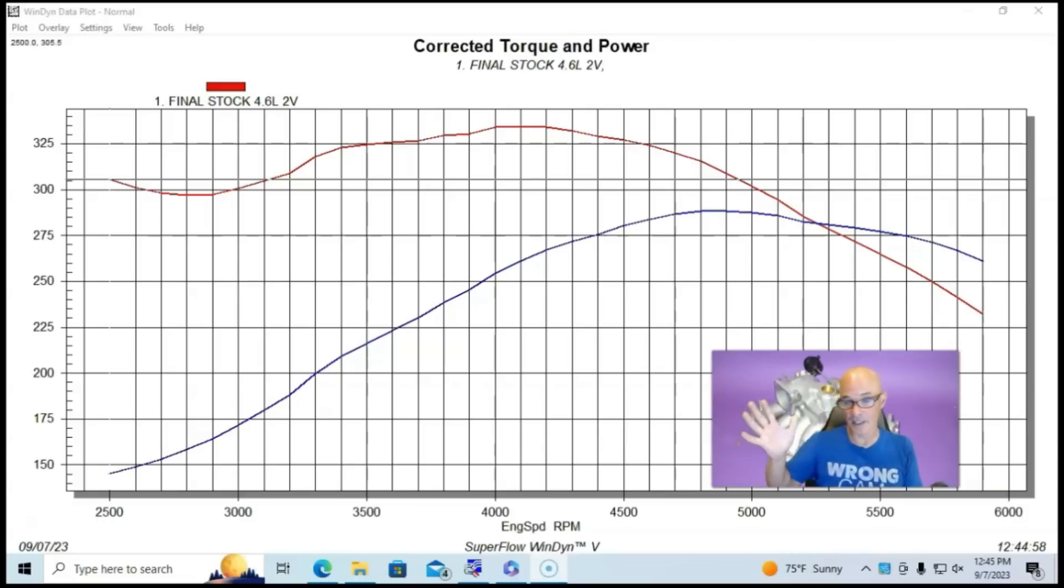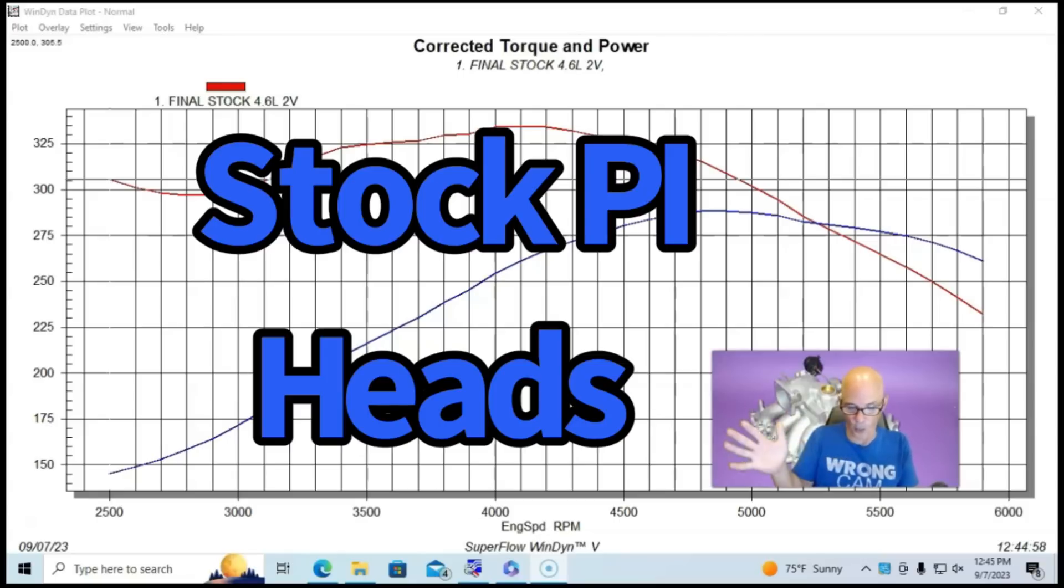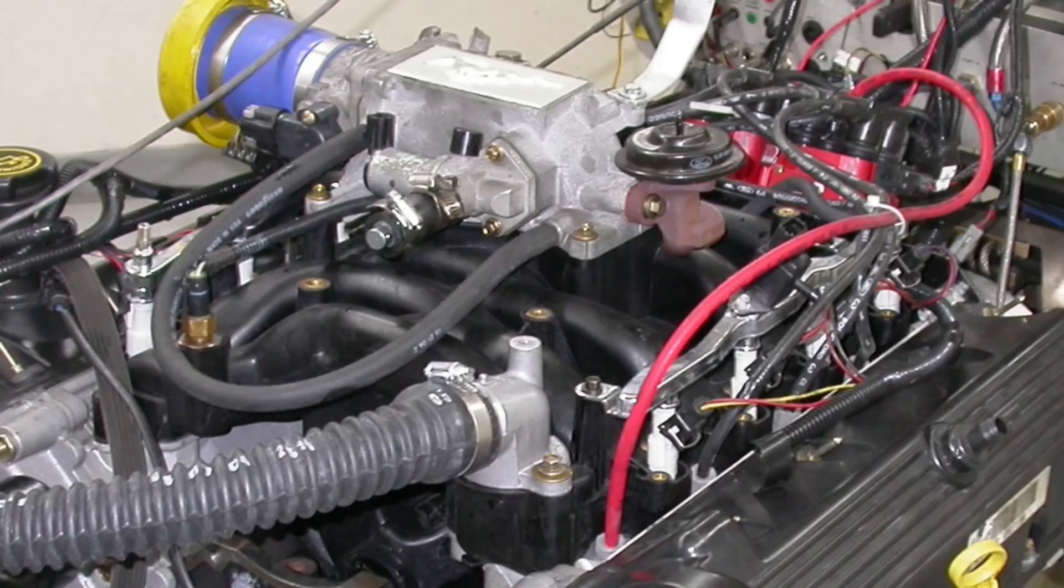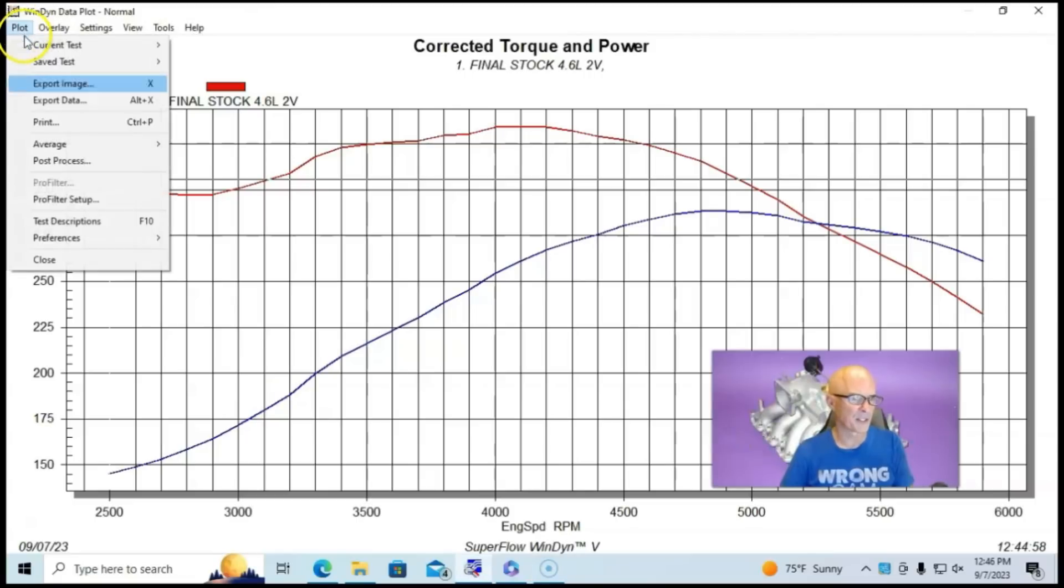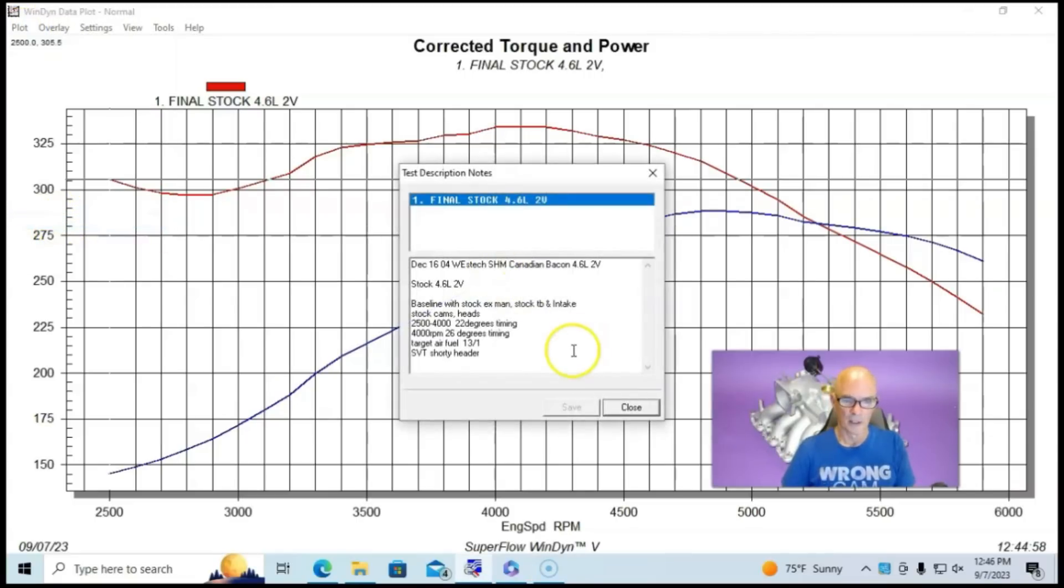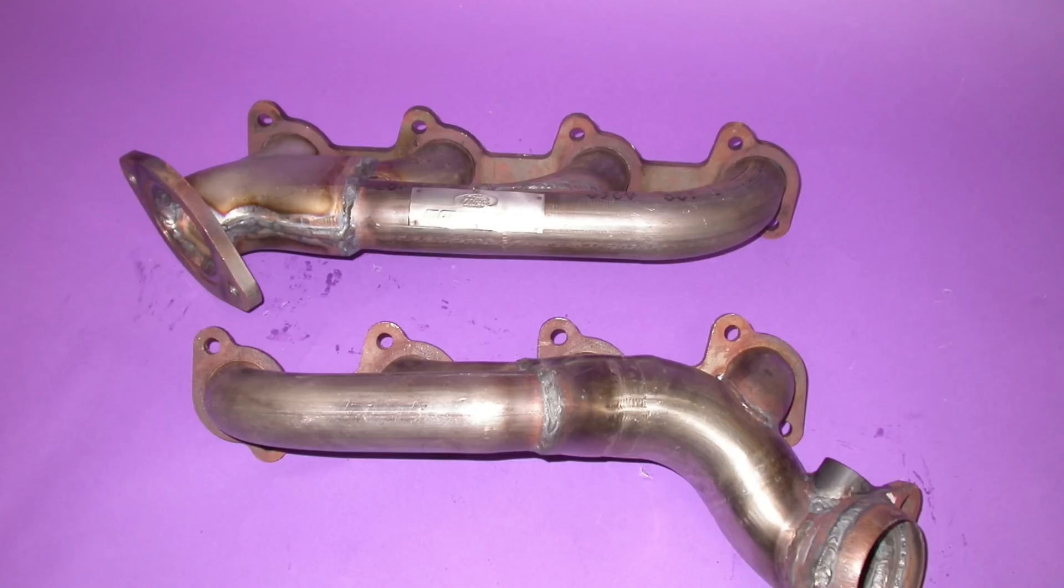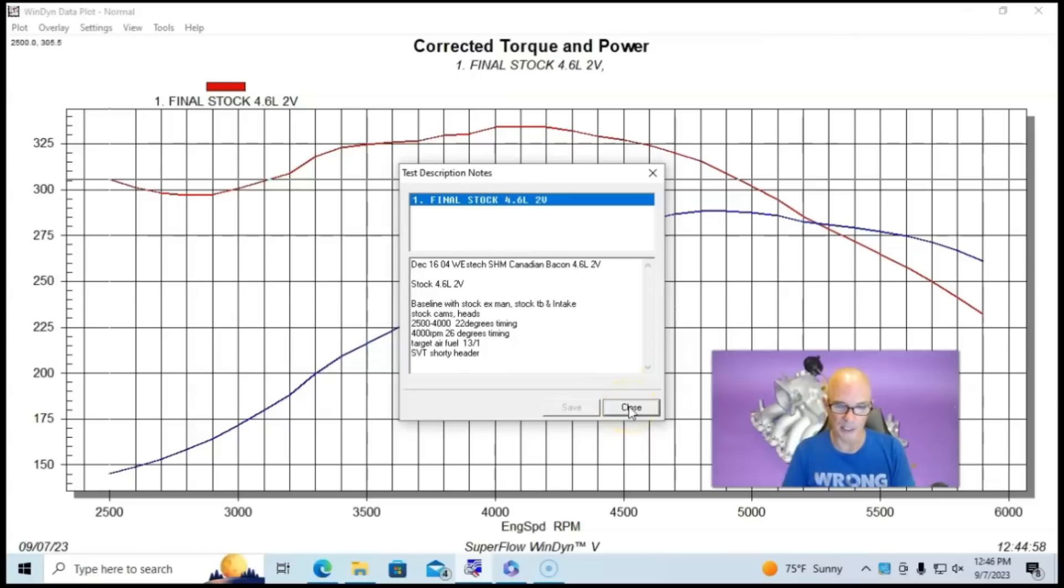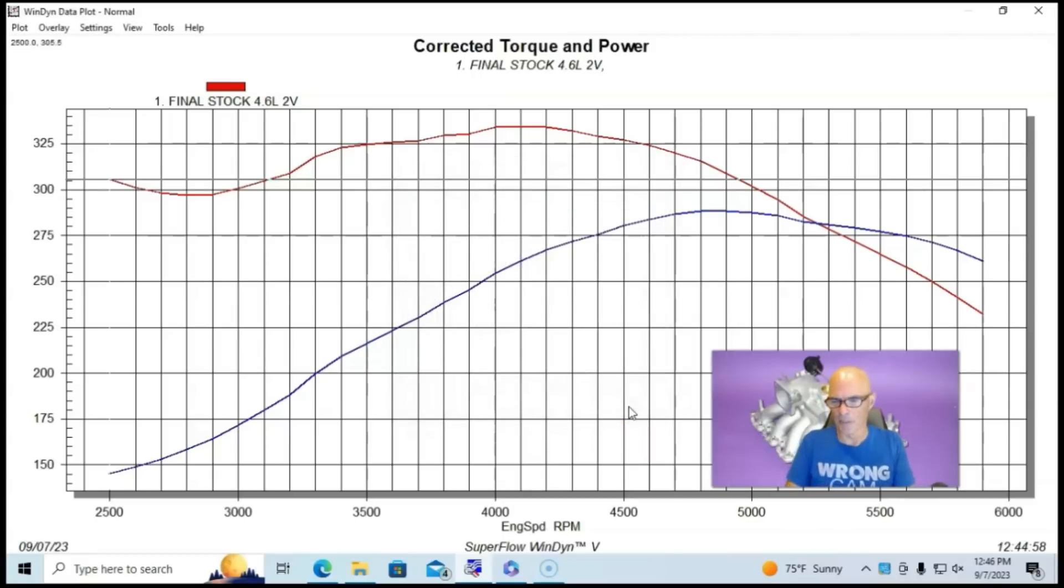But it had stock just as cast, no porting PI heads on it, a stock PI intake manifold and throttle body. We ran this thing with stock exhaust manifolds and shorty headers, and then finally put long tube headers on it. We'll go through all of those steps. But this basically represents, because it had stock compression, what a stock PI motor would be doing on the engine dyno.